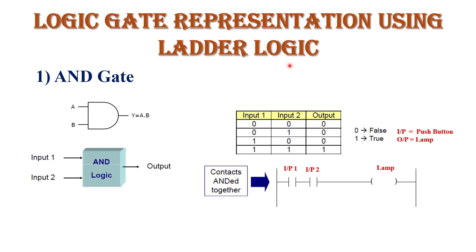Ladder logic diagrams and PLCs are based on Boolean logic operations. In this video I will explain basic logic gate representation using ladder logic diagram. The first gate is the AND gate. This is the circuit symbol of a two-input AND gate with inputs A and B, and output A·B. The truth table says: if any one input is zero, output is zero; only when both inputs are one is the output one.